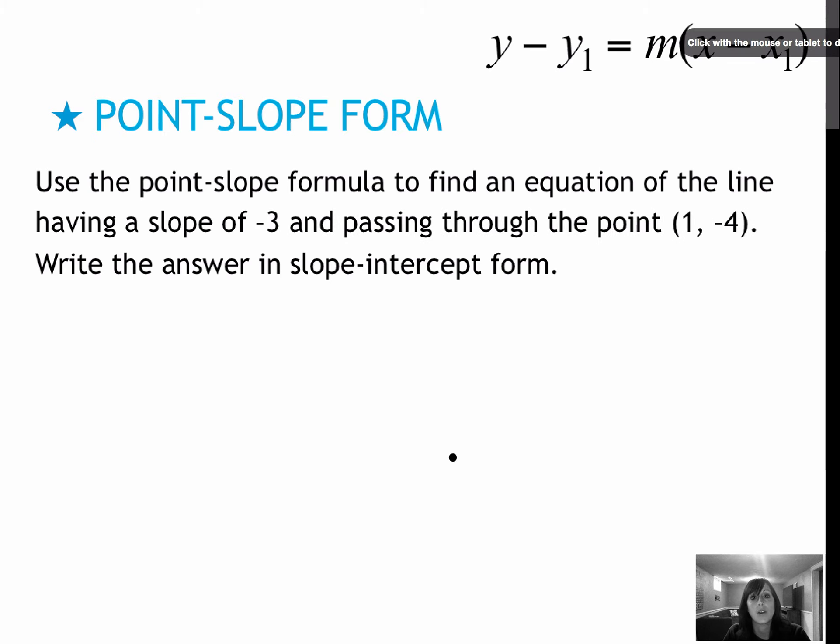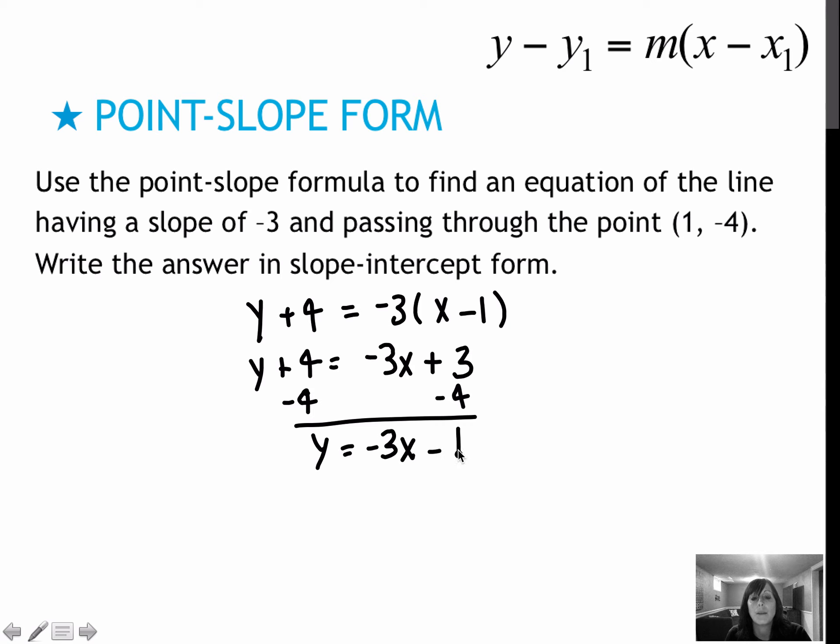Here's one for you to try on your own. We have y minus negative 4. I'm going to go ahead and write that as y plus 4. My slope is negative 3. And then x minus my x value of 1. That is point slope form. They're asking now for slope-intercept form. So again, I'm going to distribute negative 3 times x is negative 3x. Negative 3 times minus 1 or negative 1 is plus 3. Negative times a negative makes it positive. And then I'm going to subtract 4 from each side to get y equals negative 3x minus 1.